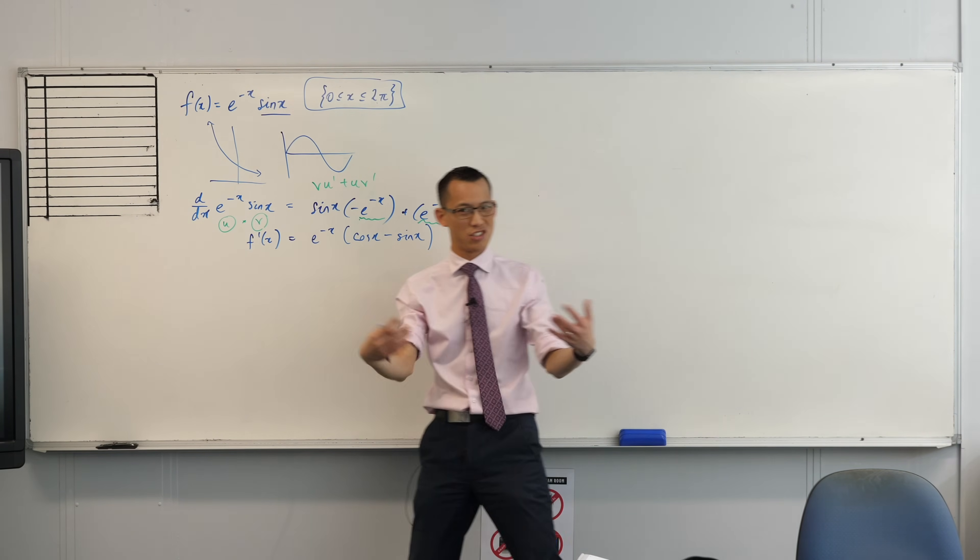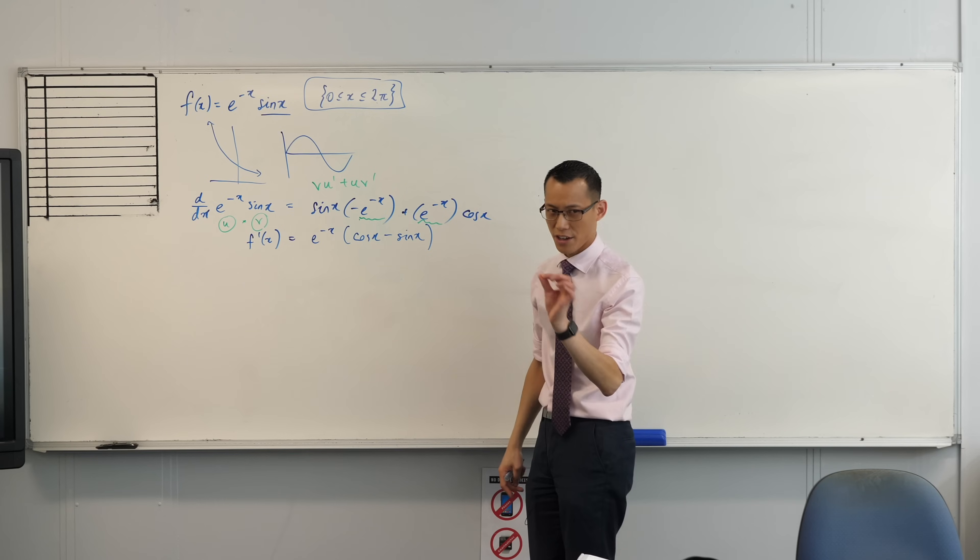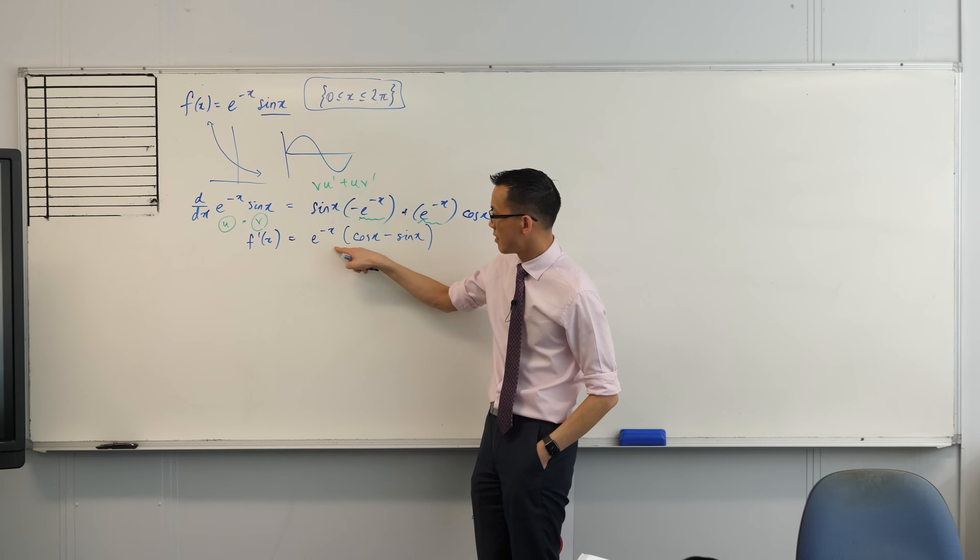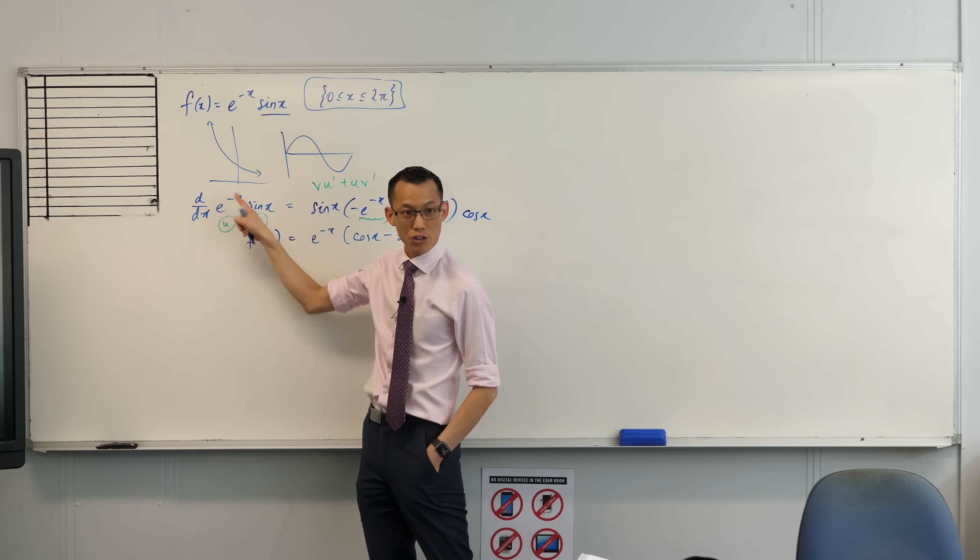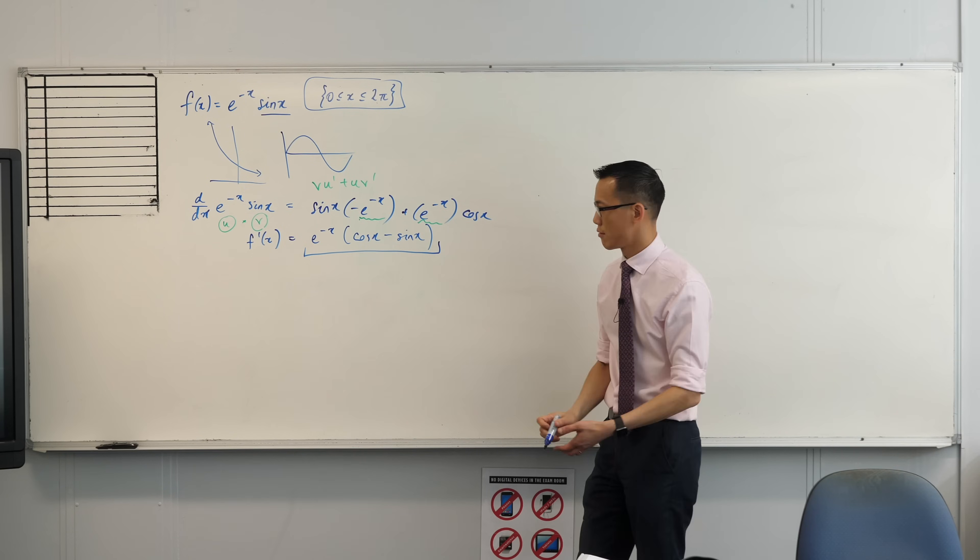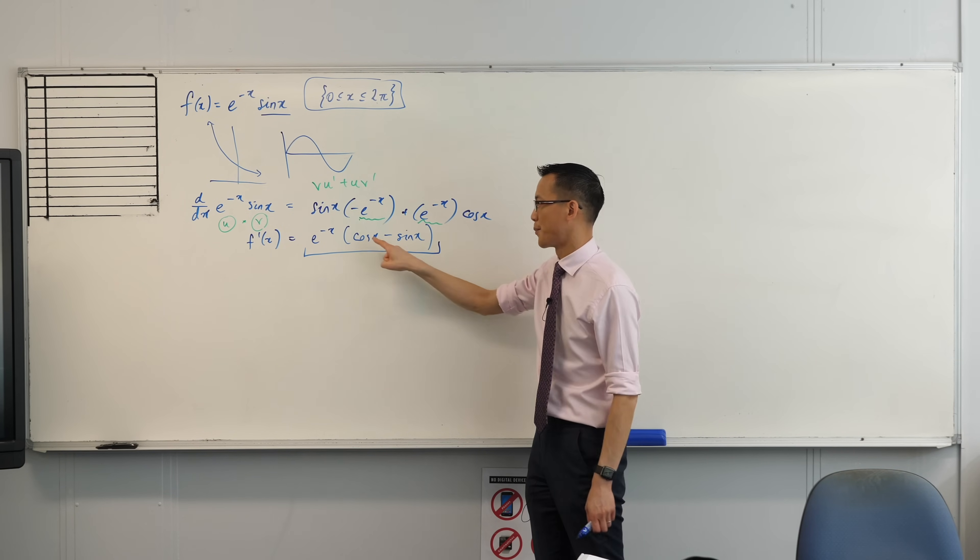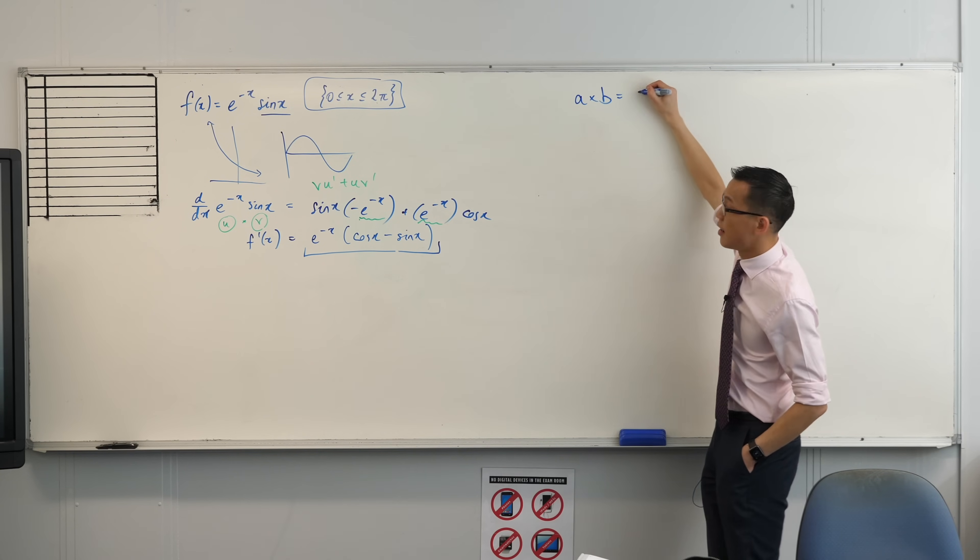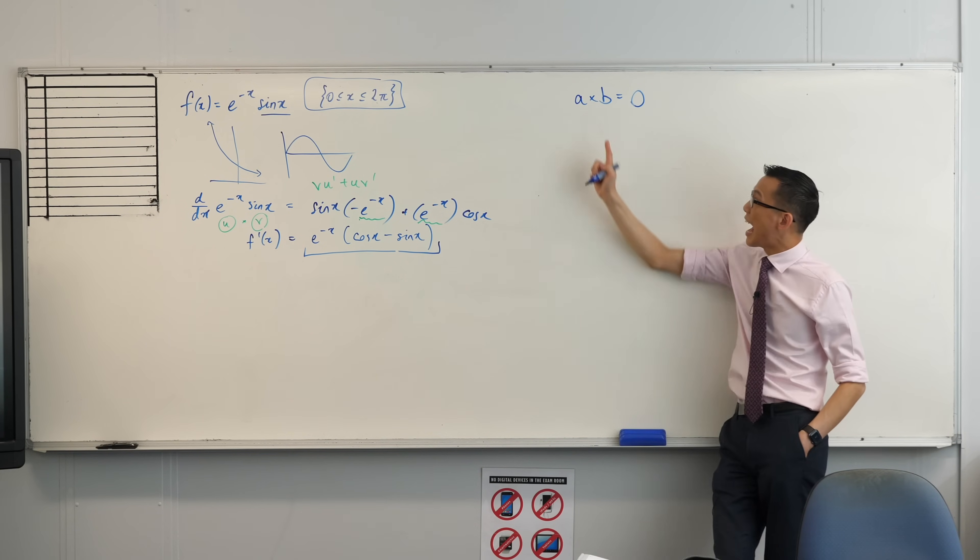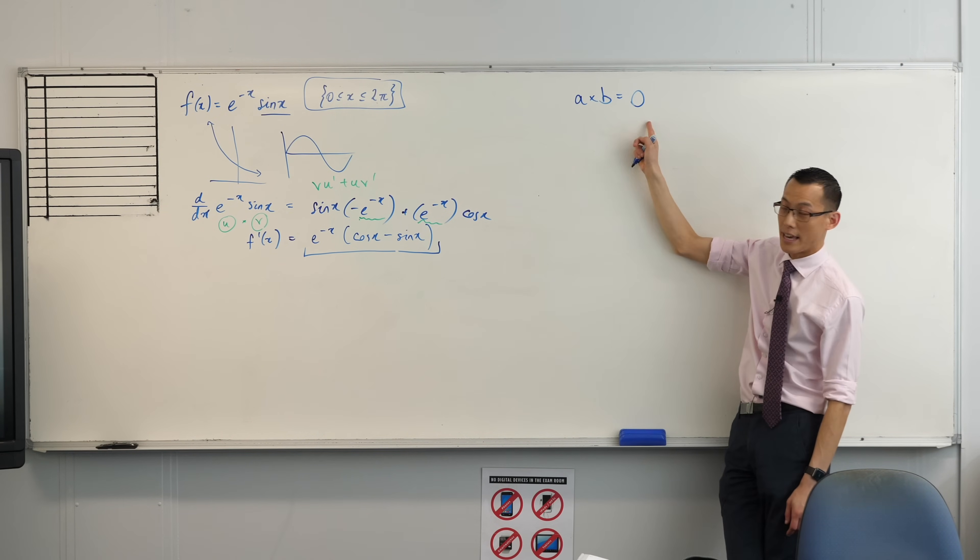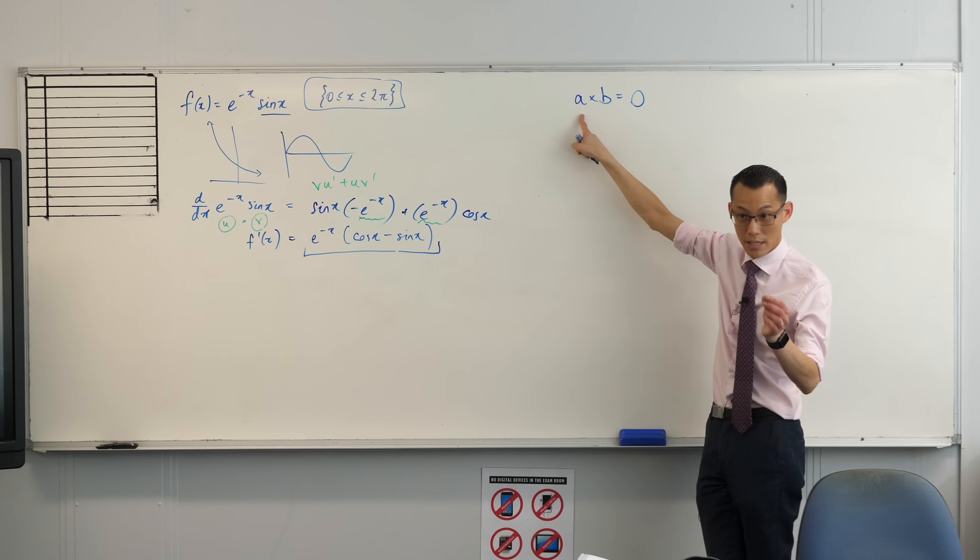I want to know when's this thing equal to zero. I drew these pictures up here not just to illustrate what these things are, but actually to do something kind of handy for the next step. If this whole thing is going to be equal to zero, then either this part is zero or this part is zero. It's a little bit like this: if I'm multiplying two numbers together and the answer will be zero, at least one of them has to be zero.